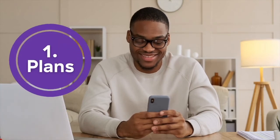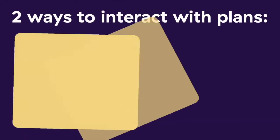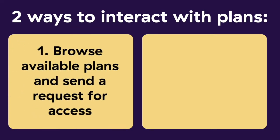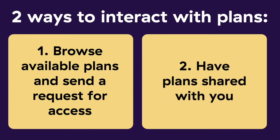First, let's look at how to browse and filter user plans so you can easily connect with prospects who match your ideal personas. There are two ways for you to interact with plans: you can either browse available plans and send a request for access, or have plans shared with you, either by prospects you already have a relationship with, or consumers who found you in the app using info from your advisor profile.